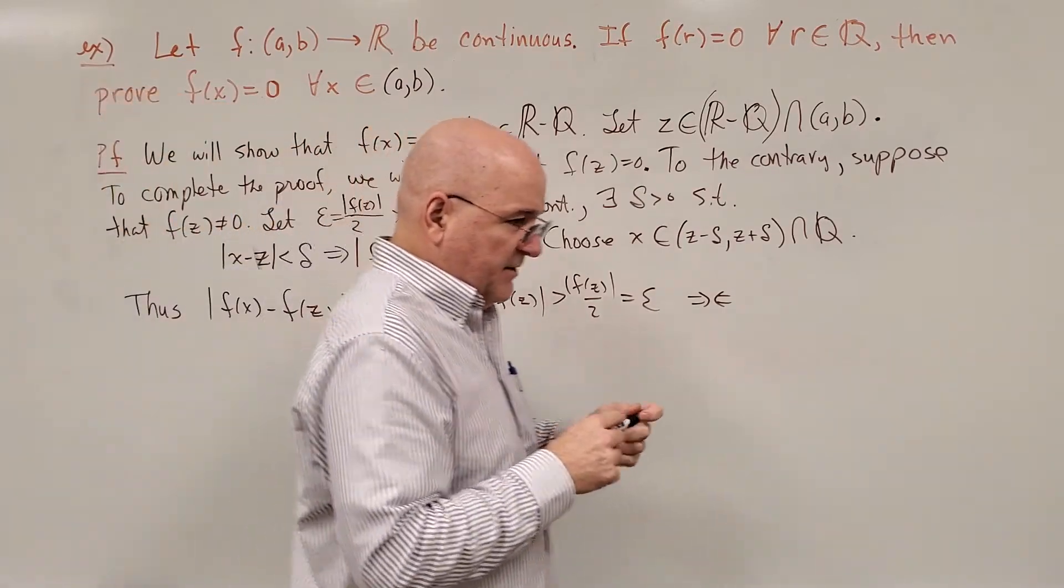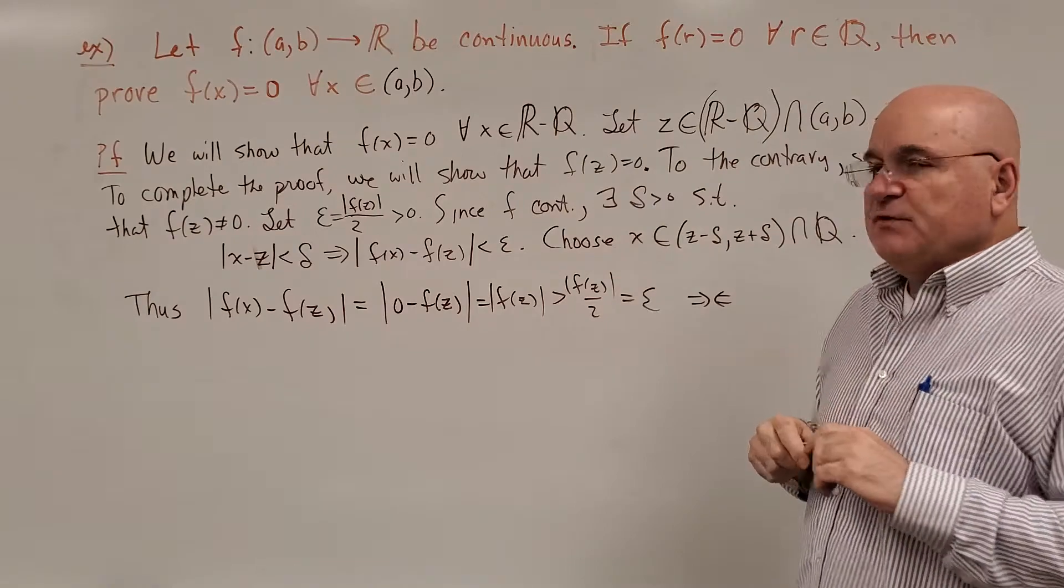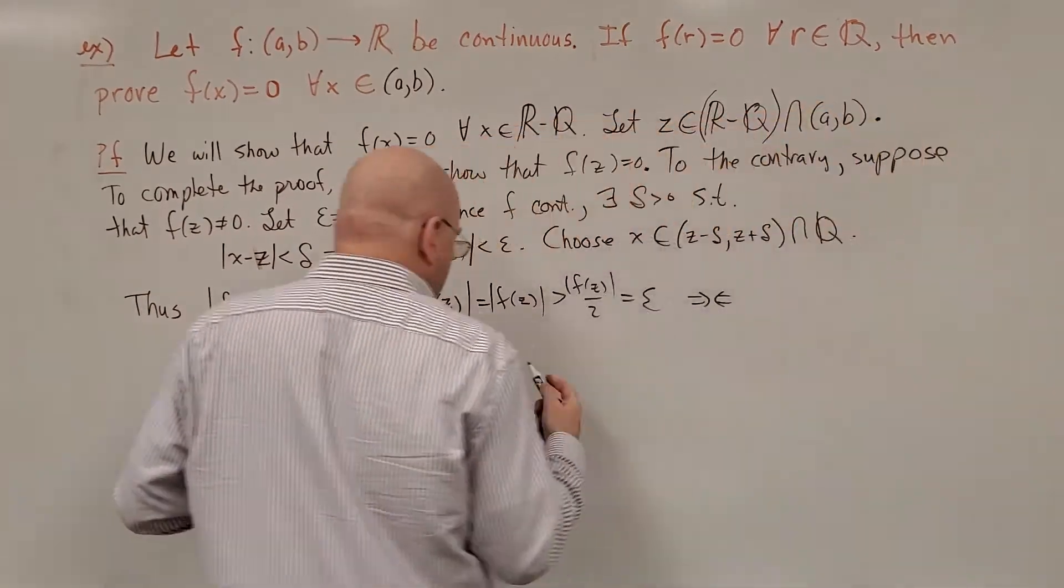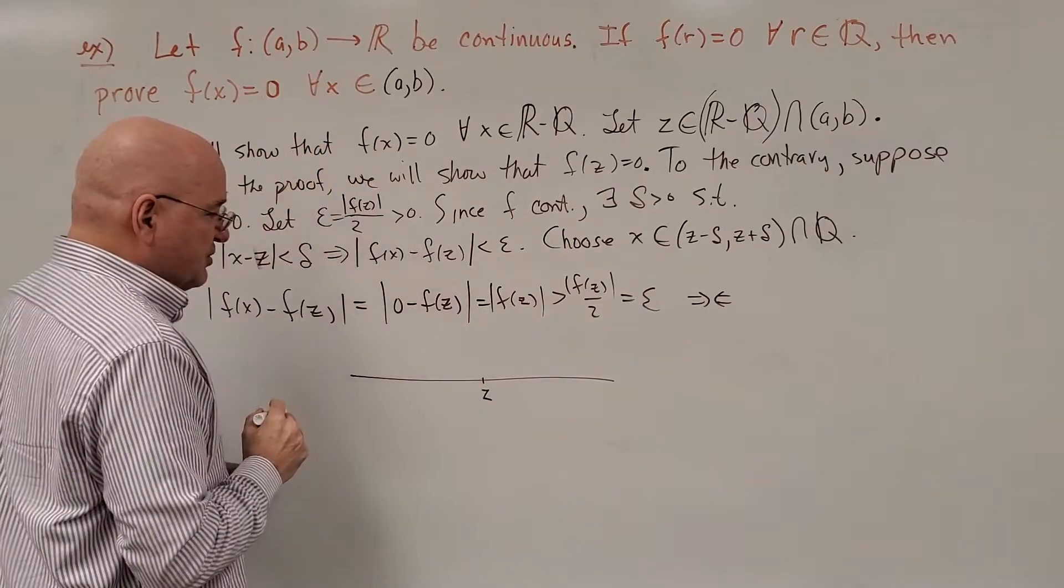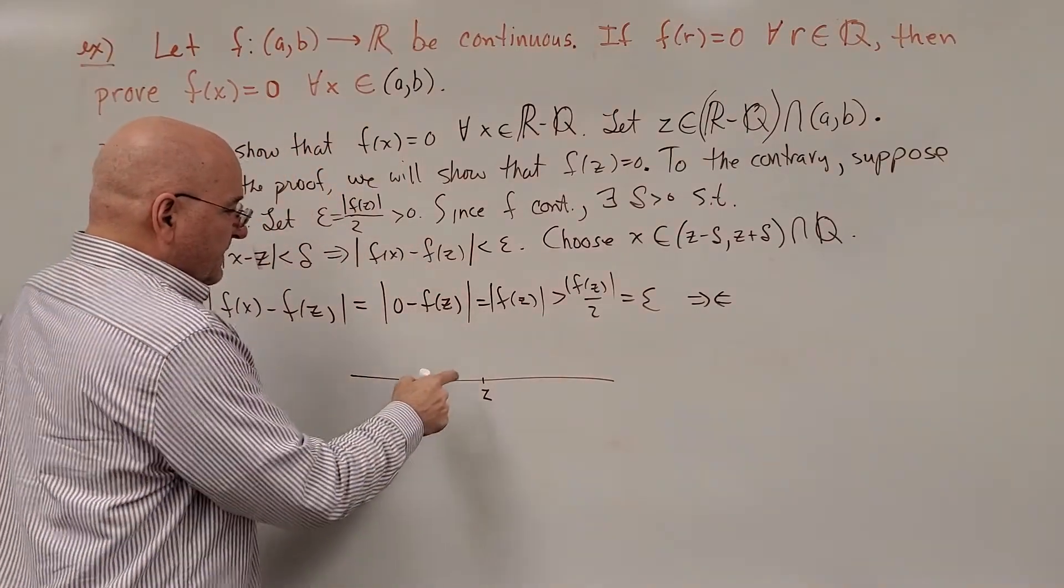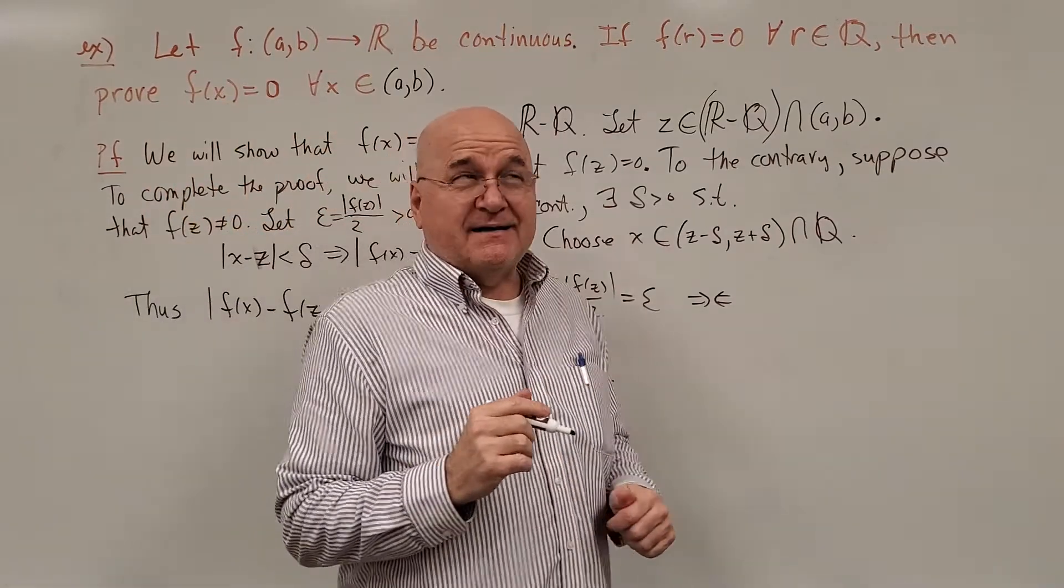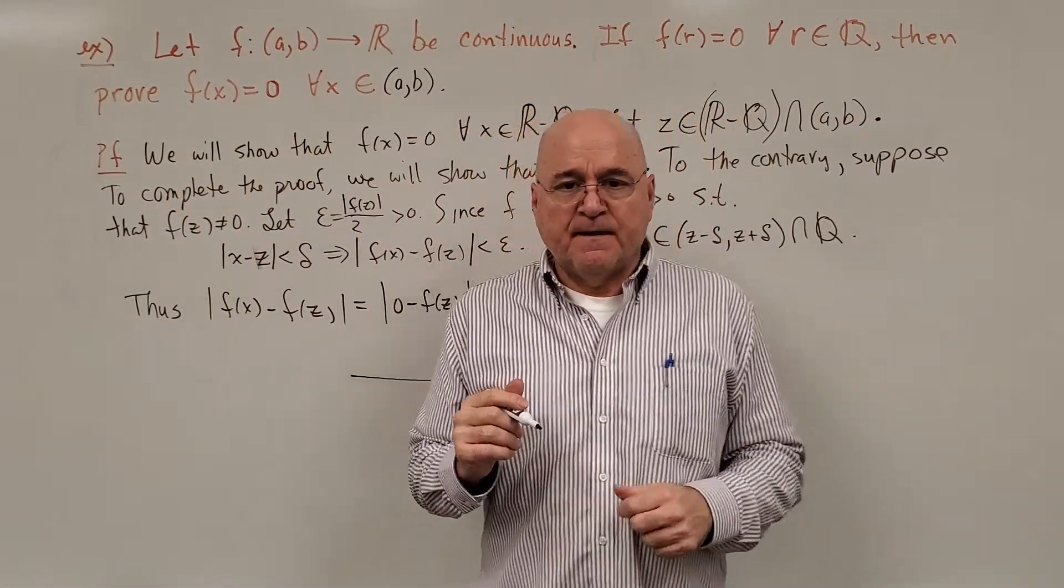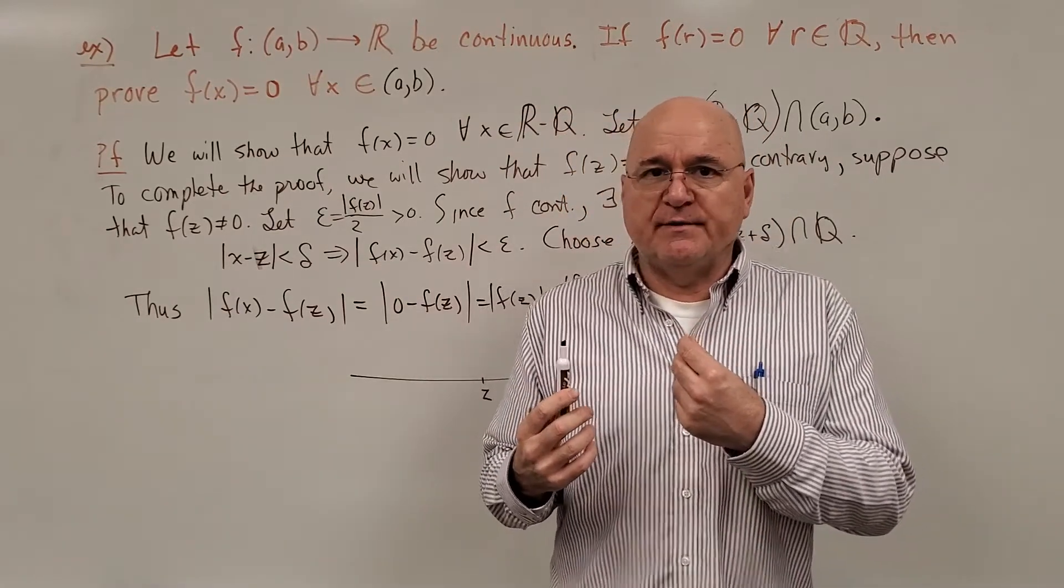Now, before I... I don't think I'm going to write down this alternate proof, but we could have used sequences. We could have noted that z is an irrational number. We know from back in chapter 1 when we were talking about sequences, every number on the real line, doesn't matter if it's rational or irrational,